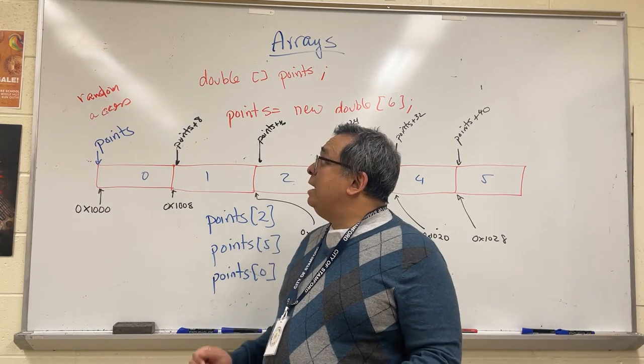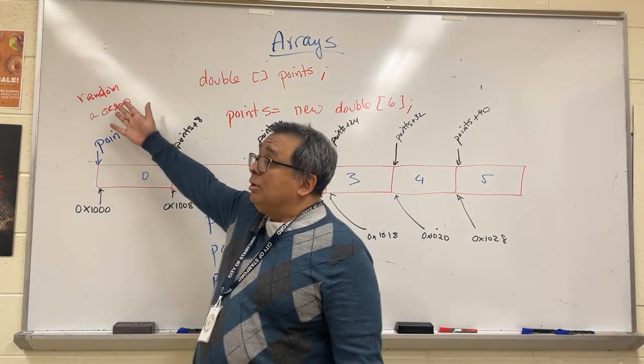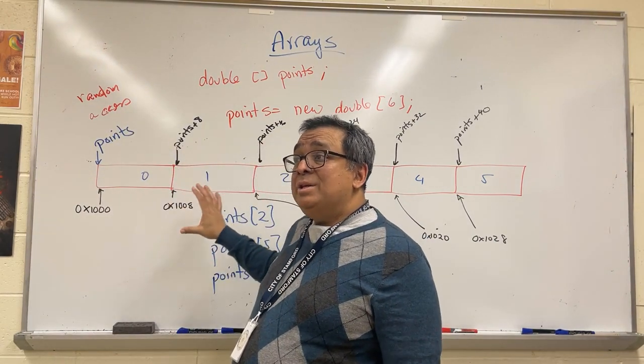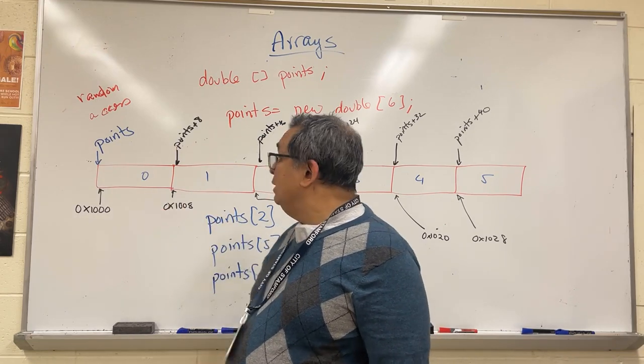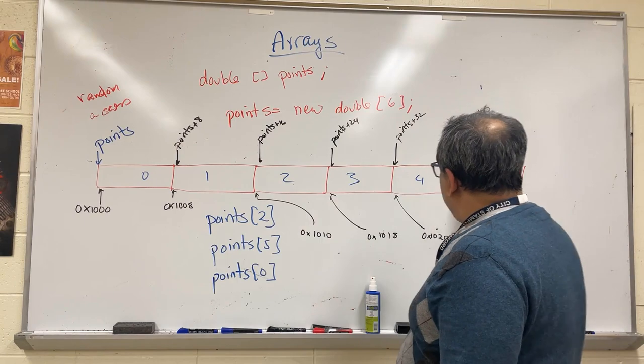I mentioned to you that arrays have a property called random access, and I want to take a couple of minutes to explain to you what that means and why it's so powerful. Here I've drawn an array